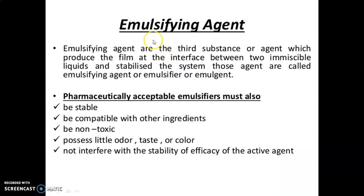Let's discuss about the emulsifying agent. Emulsifying agents are the third substance or agent which produce a film at the interface between two immiscible liquids and stabilize the system.